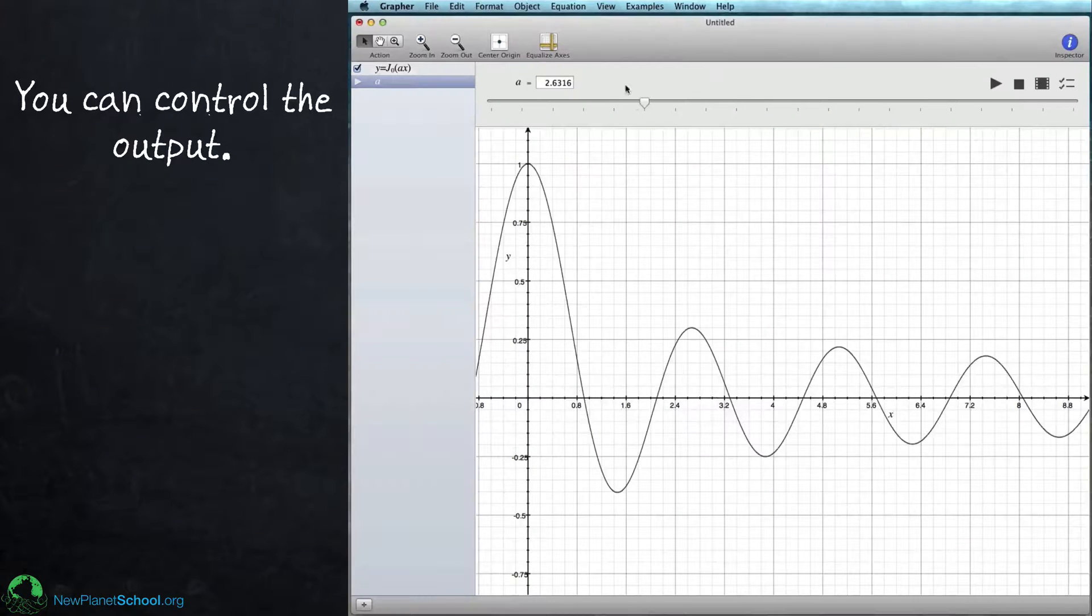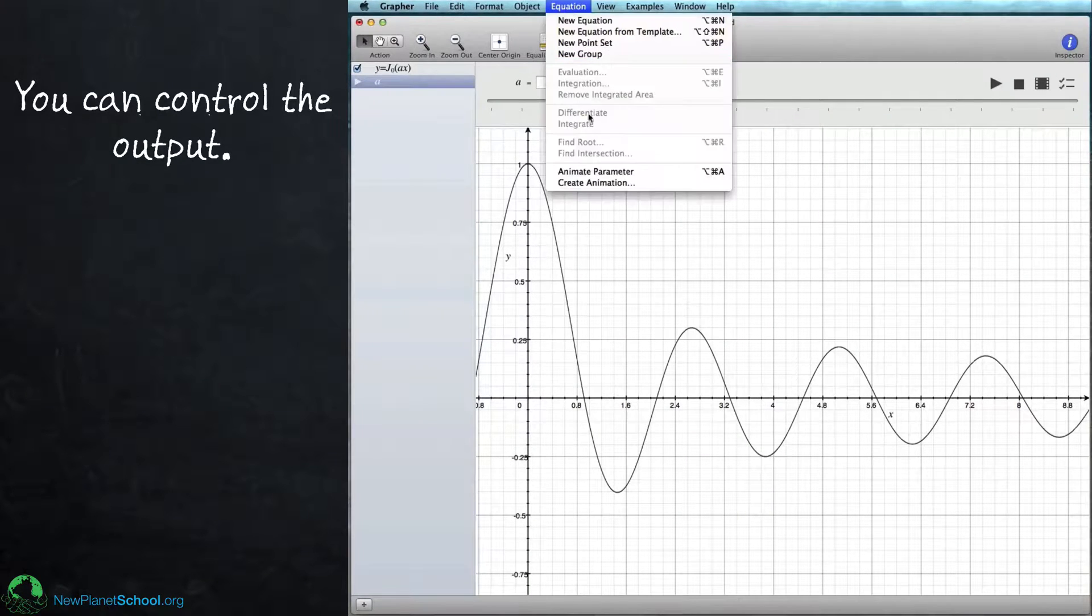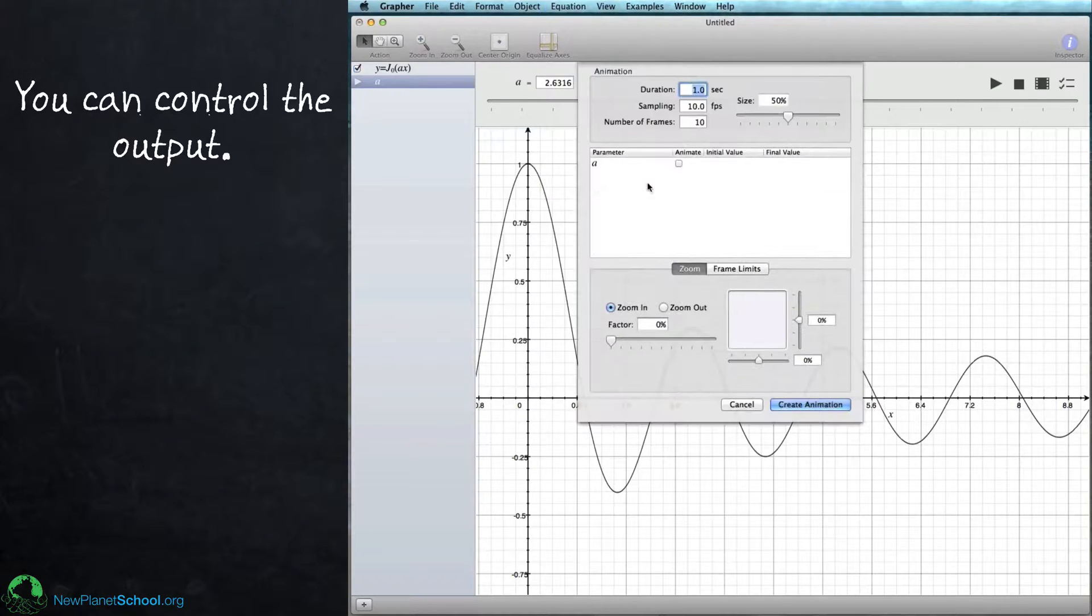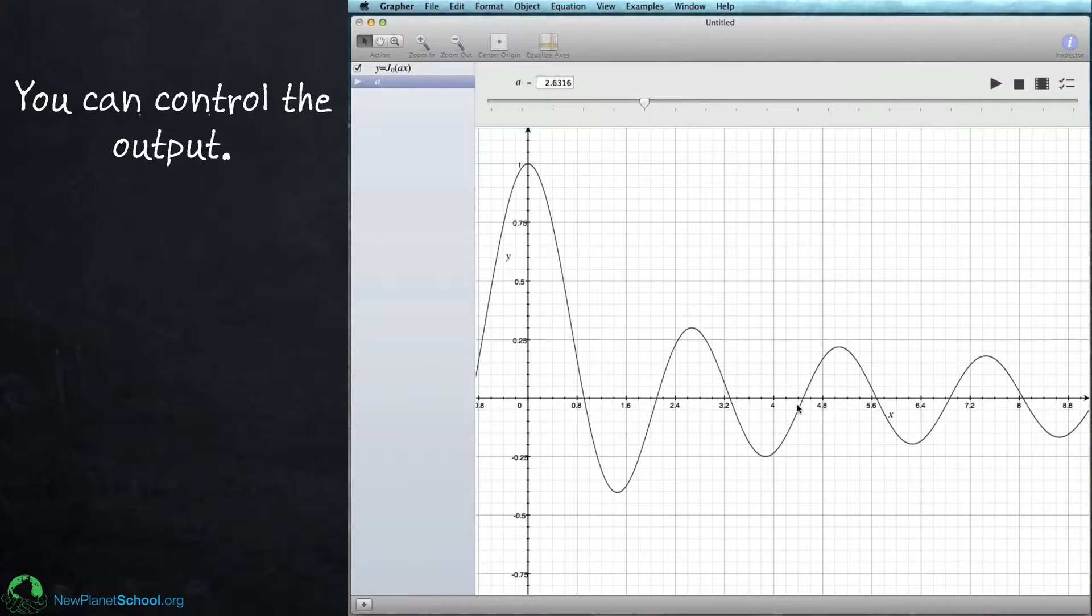You can also control the output a little bit more by instead of doing animate parameter, you can go under create animation and you get this new window to pop up. And now I can control the duration of the movie, the number of frames of the movie, the size of the movie, which parameter I want to animate here. I only have one. I can change the initial value. And I can do all this separately from what I was doing before, because this is generating specifically to generate a movie.